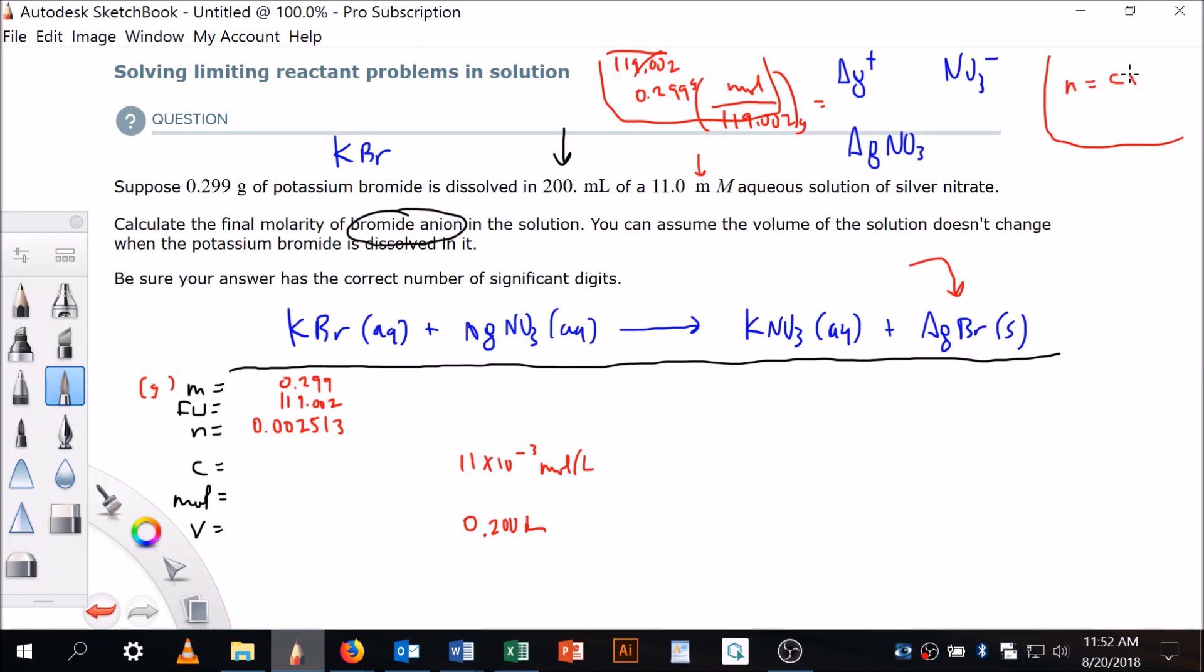And we know from previous course that moles is equal to moles per liter times liters, right? So I just multiply those two. Excuse me, 11.0 times 10 to the minus 3 times 0.2 equals 0.0022. 0.0022.